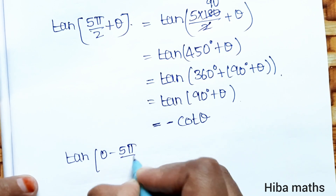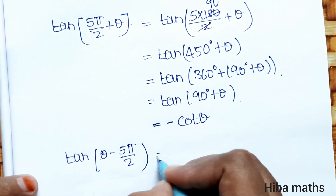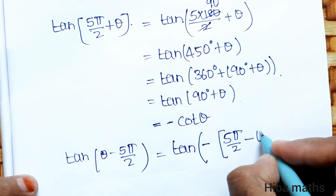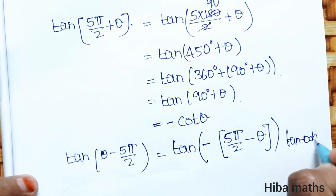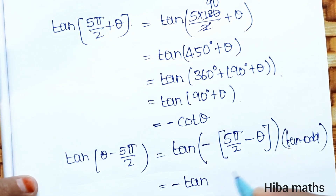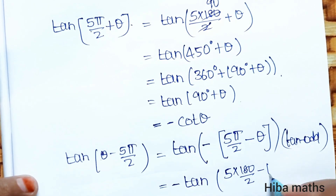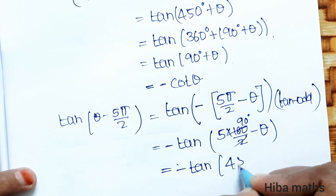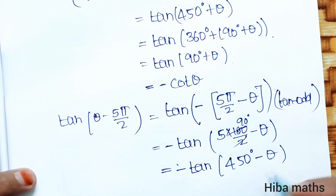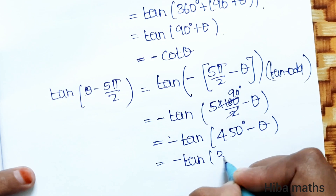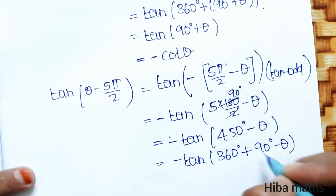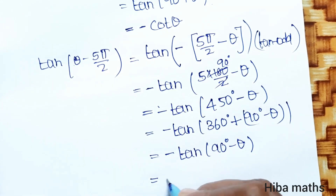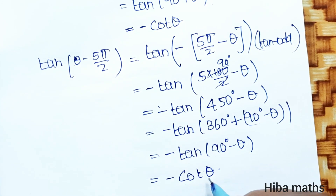For tan(θ - 5π/2): we write this as minus tan(5π/2 - θ) because tan is an odd function, so minus sign comes out. Then 5 × 180 by 2 gives 450°, so we have minus tan(450° - θ), which becomes minus tan(360° + 90° - θ), giving minus tan(90° - θ), whose value is minus cot θ.